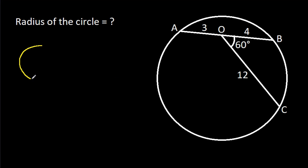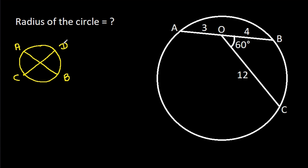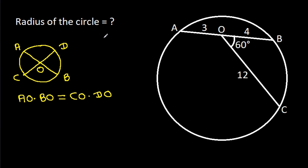In any circle, if two chords AB and CD intersect at O, then AO times BO will be equal to CO times DO.